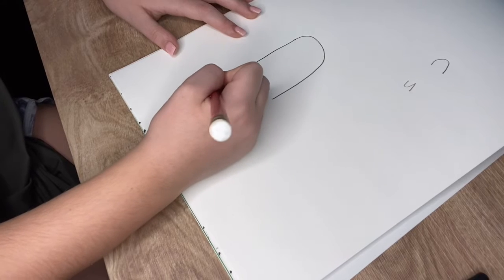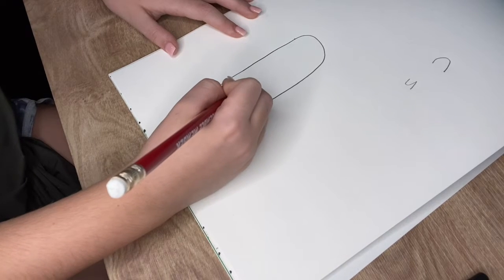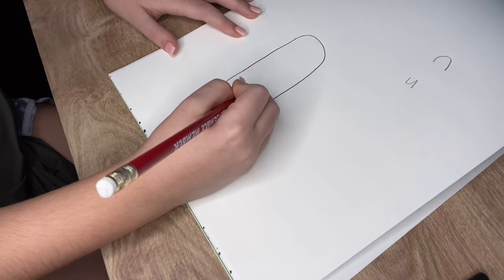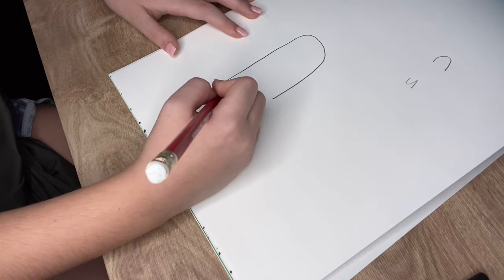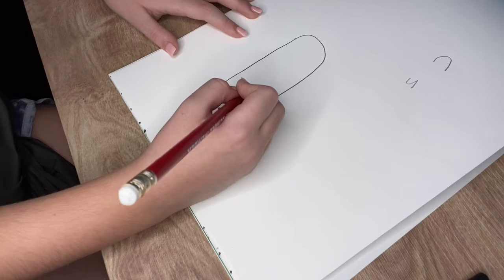Now you are going to continue that straight line and draw little feet. So you line, you go down, you go up, you go down, and then you go back up and you connect it.